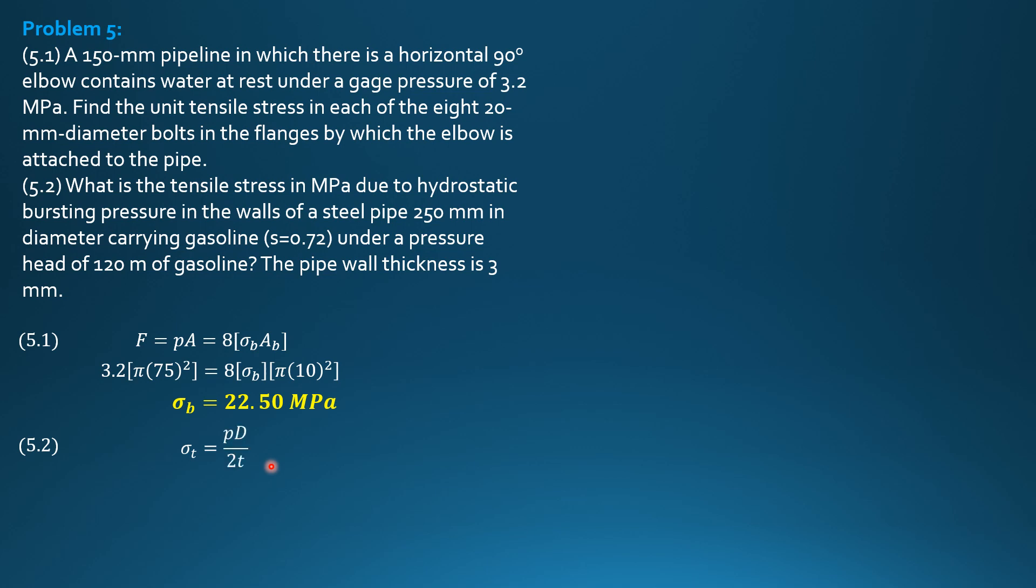Then, the pressure is equal to... Let's express pressure in terms of megapascals. The specific weight of gasoline, 0.72 times 9.81 times head 120 divided by 1,000. So 0.72 times 9.81 times 120 divided by 1,000. So the pressure is 0.8476 megapascals.